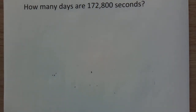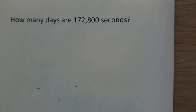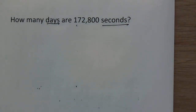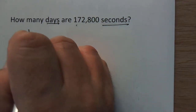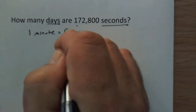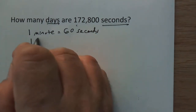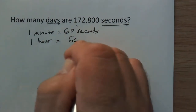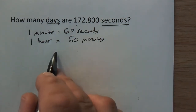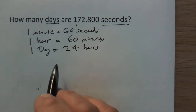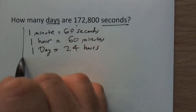Let's do another one. This one will be going from a large number to a smaller one: how many days are in 172,800 seconds? We're converting seconds into days, so we need conversion factors. One minute equals 60 seconds. One hour equals 60 minutes. One day equals 24 hours. We've got days, hours, minutes, and seconds — I think we have everything we need.